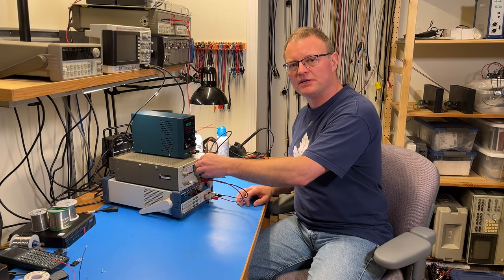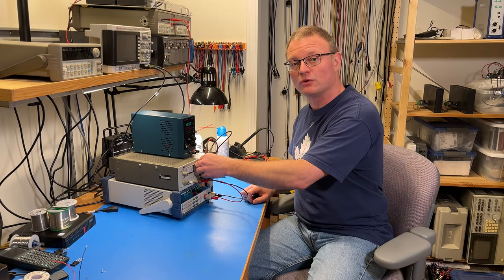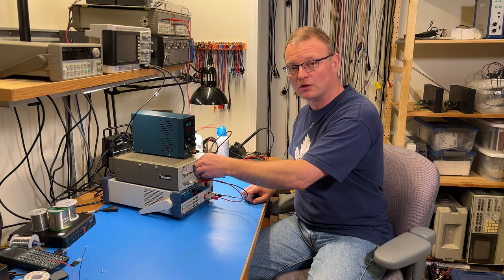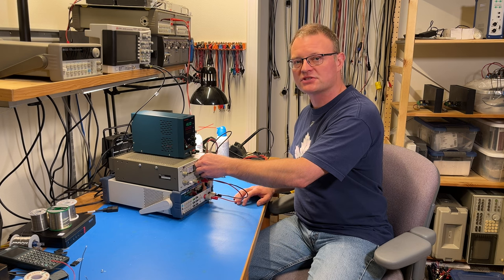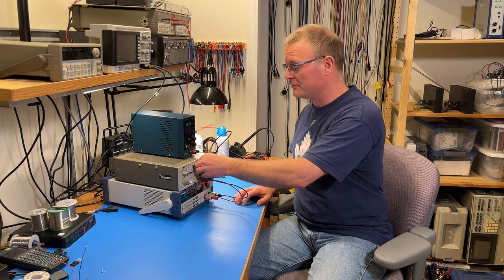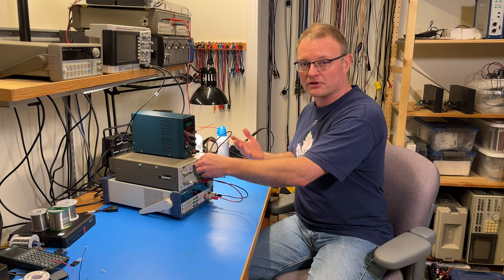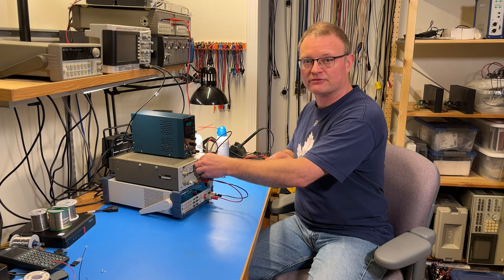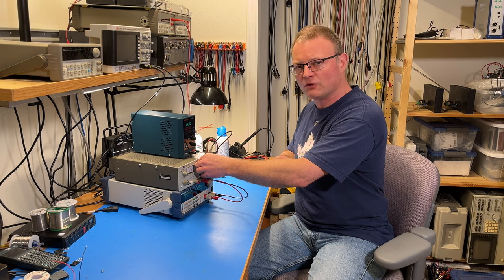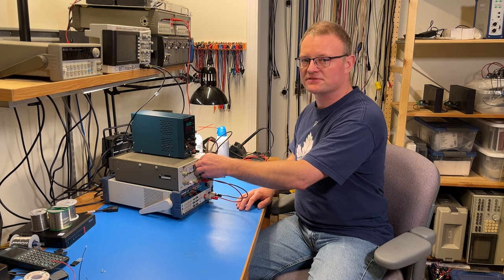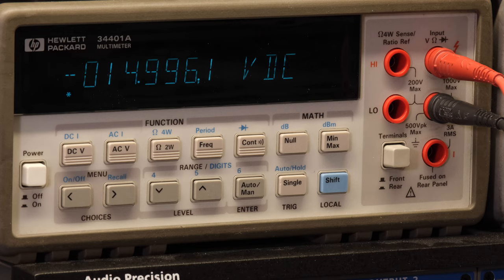And let's for completeness test the minus 20 volt output of the HP as well. This also gives us an idea of what the tracking accuracy is. Because, you remember, the plus 15 measured 15.01 volts. And the minus 15 measures minus 14.996. So the two outputs track within 10 millivolts. That's pretty decent.